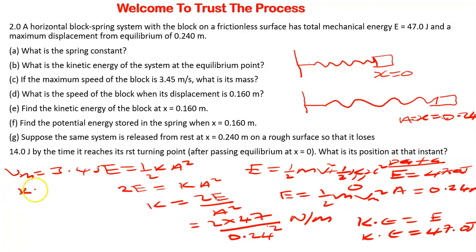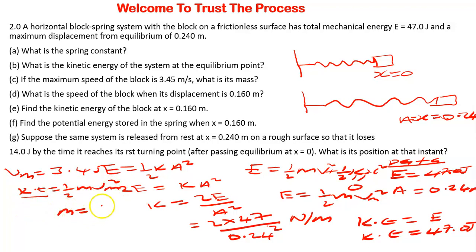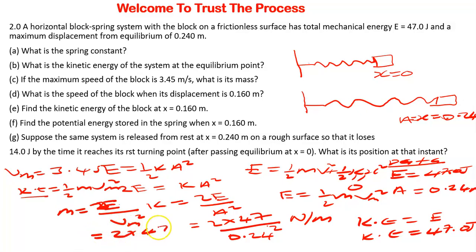We know that the total kinetic energy is given by one-half m V_max squared, and we have the kinetic energy which is 47 joules. The mass of this block is what we are looking for, and V_max has been given. Making mass the subject — multiplying by 2 then dividing by V_max squared — the mass will be given by 2 times the total energy divided by V_max squared. That is 2 multiplied by 47, divided by 3.45 squared.